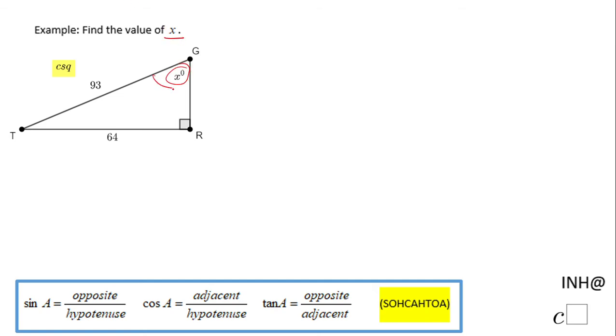If we notice here, we know this leg, which is the opposite leg. We also know this side, which is the hypotenuse, the longest side in the triangle on the other side of the right angle, in this case angle r.